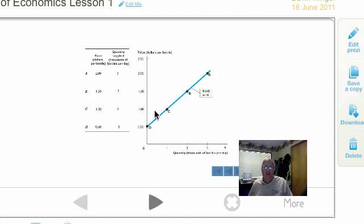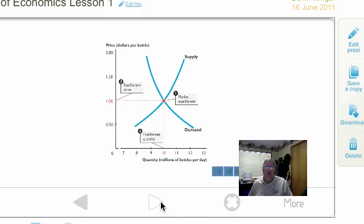The supply curve, we can remember, goes up because supply has the word up in it. Now when we put the supply and demand curves together, we can find our equilibrium.